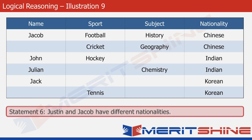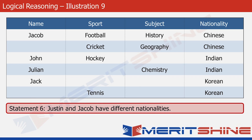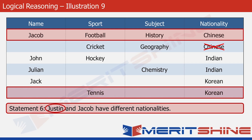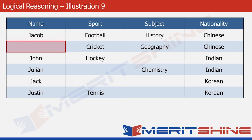Statement six tells us that Justin and Jacob have different nationalities. Jacob is Chinese, so Justin cannot be Chinese. From the table we can also see he cannot be Indian, since the Indians are John and Julian. So Justin has to be Korean. One Korean is Jack, so the only place left for Justin is the last row. Let's put Justin there. The only name left to appear in the names column is Joseph, so let's write Joseph in the remaining cell.